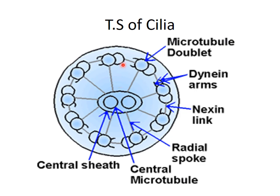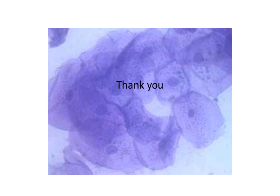You should be able to identify, draw, and label the structure of the transverse section of the cilia, which is very important. In later lectures we will discuss other structures formed from microtubules, like the centrioles and the basal body, and compare the structure of microtubules, cilia, centrioles, and stereocilia. I hope you have understood the structure of the cilia. Thank you.